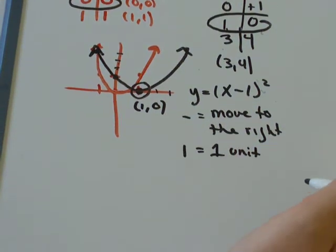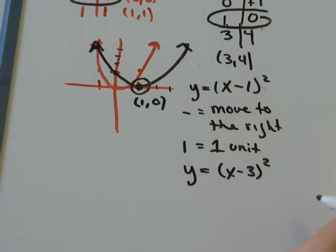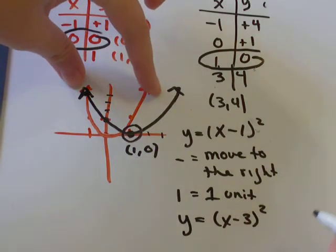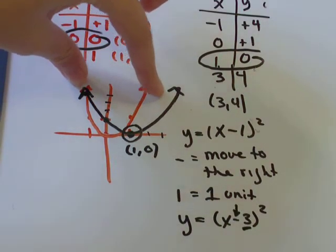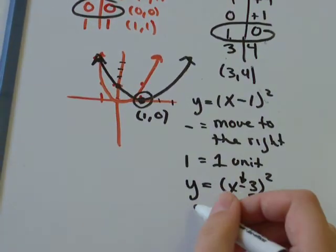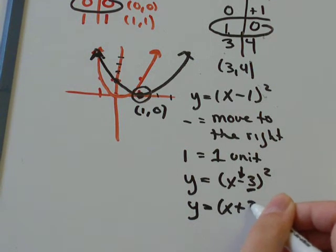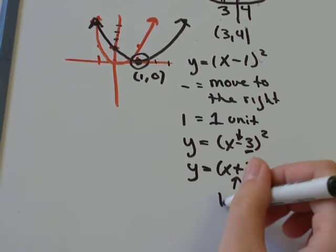So if we had something like y equals x minus 3 squared, we would take our original graph and we would move it three units to the right. So we'd move it 1, 2, 3. It would be over there somewhere. If we had y equals x plus 3, we would be moving it three units. This time, we would be moving it to the left.